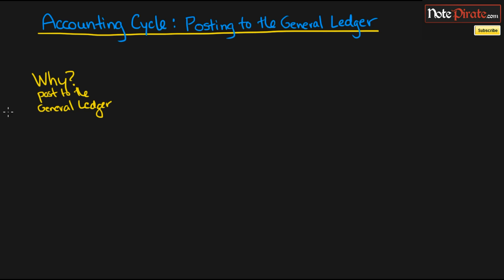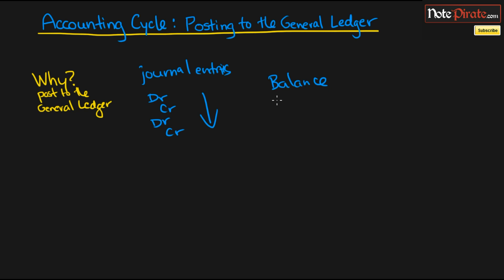Let's talk about why we have the general ledger and why we post to it. In the last tutorial we had journal entries — just debits and credits listing all of the transactions within our fiscal reporting period. We literally list all of them, but the thing is, if we ever wanted to know the balance of a certain account — like accounts receivable, cash, or accounts payable — we wouldn't be able to, because journal entries don't provide us with an ending balance of the account.